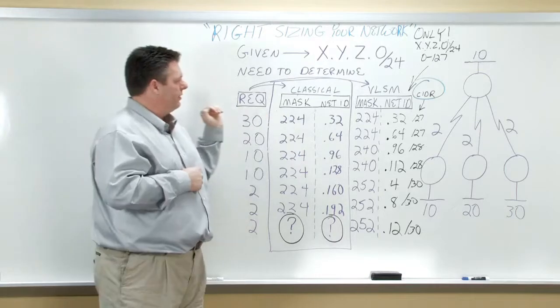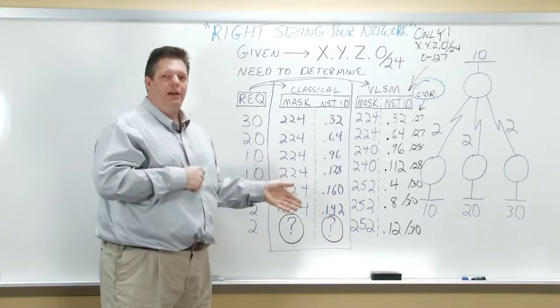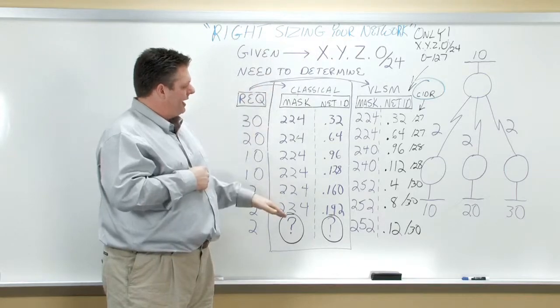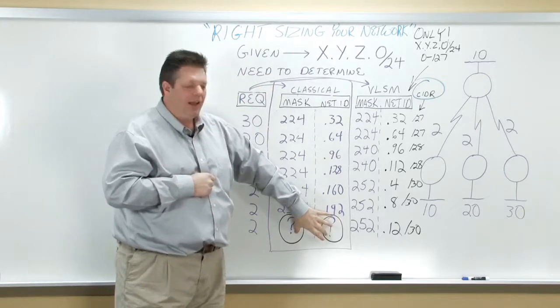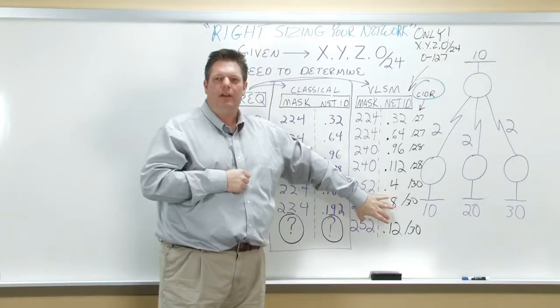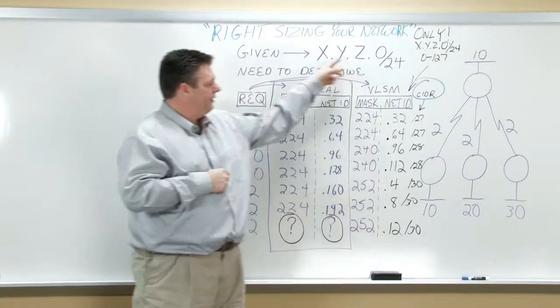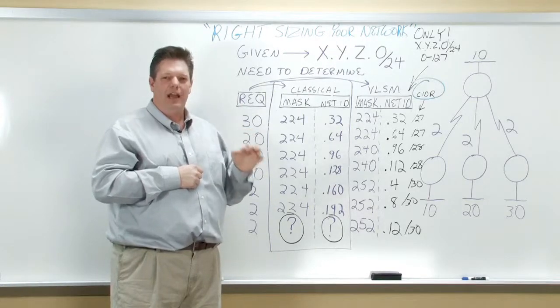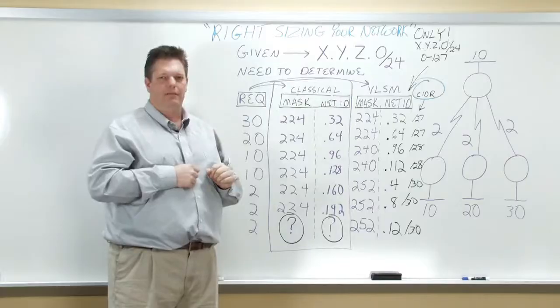And one of the things you can note certainly is that not only have I solved this problem by right-sizing my network, but comparing it to classical, I've run out in classical. And in this case, I've only used 50 percent of the available host IDs that I've been given. So I could double the size of my network and I can still have enough to continue within that prefix.